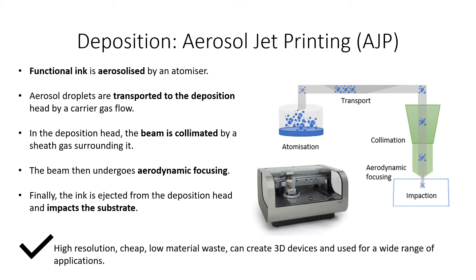To create thin films using aerosol jet printing, first a functional ink is aerosolised before being transported to the deposition head using an inert carrier gas. The beam in the deposition head is collimated and undergoes aerodynamic focusing, and finally the ink is ejected and impacts the substrate.